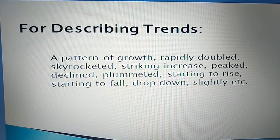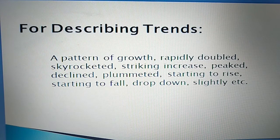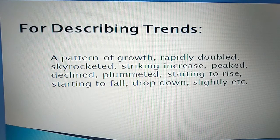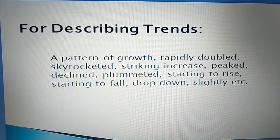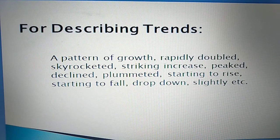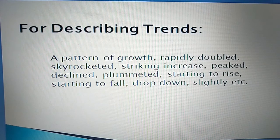For describing trends in the second paragraph, if there is continuous growth, you can write 'pattern of growth'. If something doubles rapidly, you can write 'rapidly doubled', 'skyrocketed' — meaning it went very high very fast. 'Striking increase' means increasing very rapidly. 'Peaked' means something reached a very high point in the graph. 'Decline' or 'plummeted' means decreasing. 'Starting to rise', 'starting to fall', 'drop down slightly' — these are the terms you can use while writing about trends.